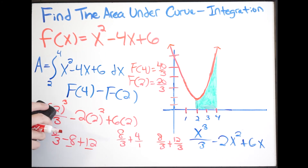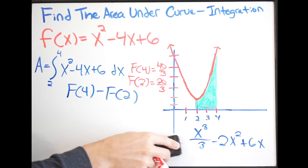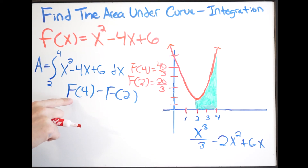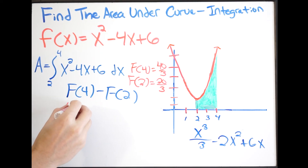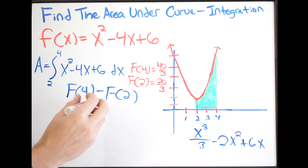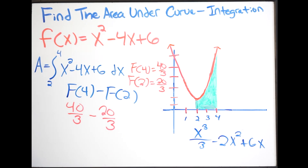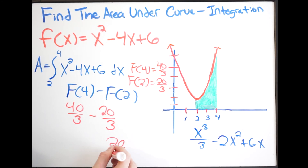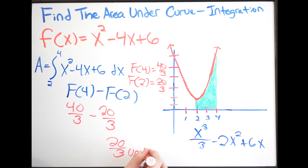We're essentially done. Following our steps, we take the anti-derivative at 4, which is 40 over 3, minus the anti-derivative at 2, which is 20 over 3. That gives us simply 20 over 3. We'll leave it as a fraction and write it as units squared. So the area underneath this curve, shown in green, is 20 over 3 units squared — found using integration.